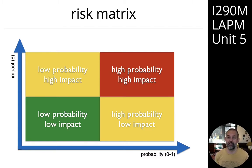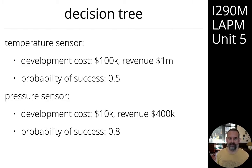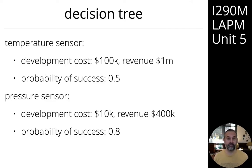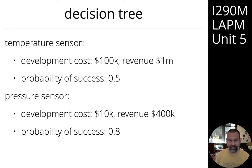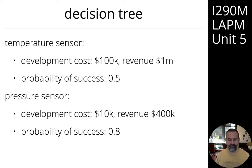We're going to start with a very simple example. As a product manager, you have a decision to make: you can either build a temperature sensor for your internet of things device or you can build a pressure sensor. We've got some things to take into account in our model — firstly, the development cost of building each sensor; secondly, the revenue we believe that sensor will make on the market; and thirdly, the probability of actually getting that revenue outcome.